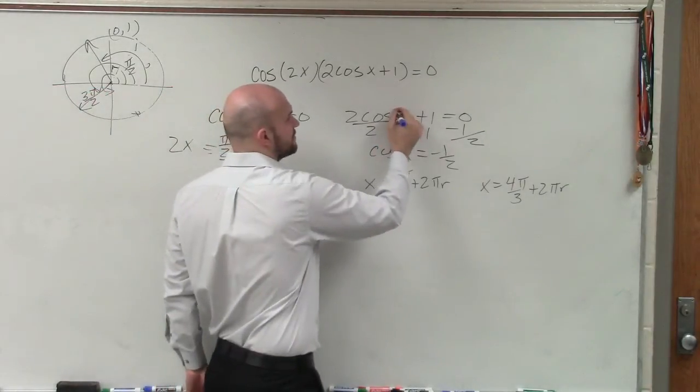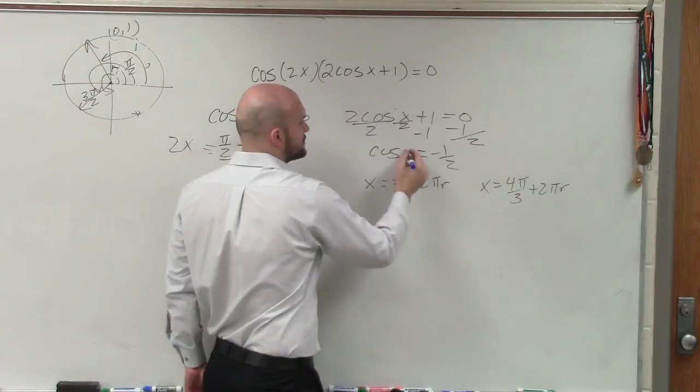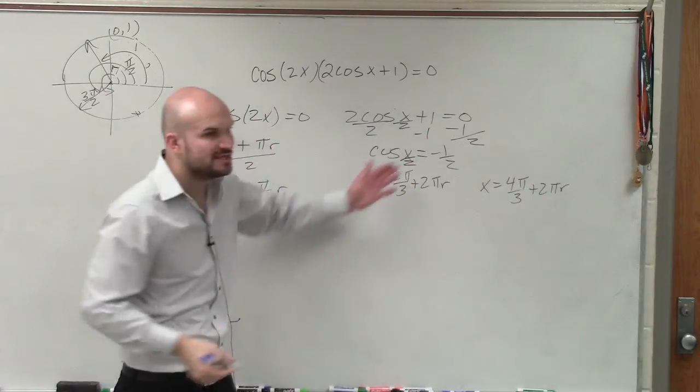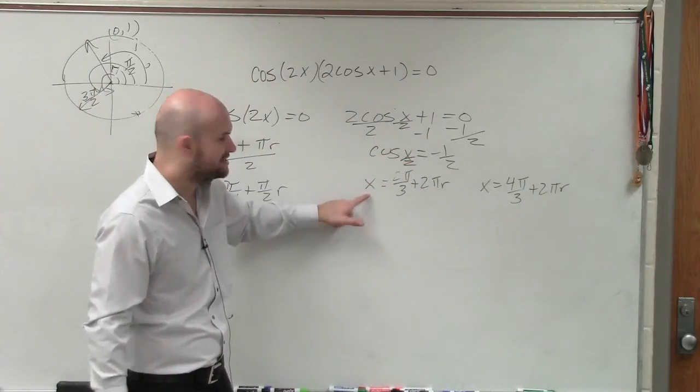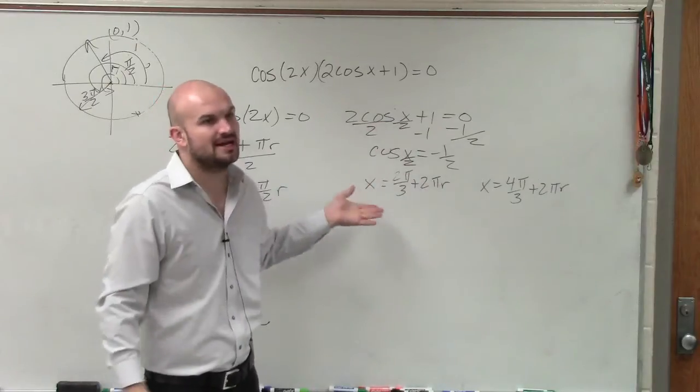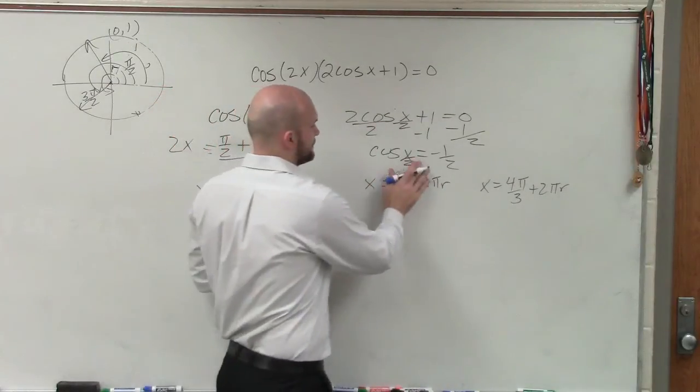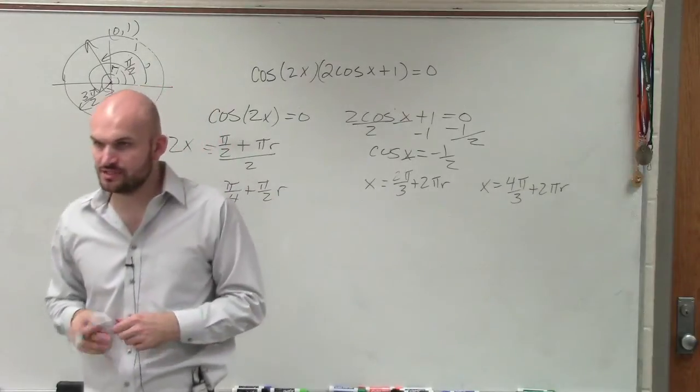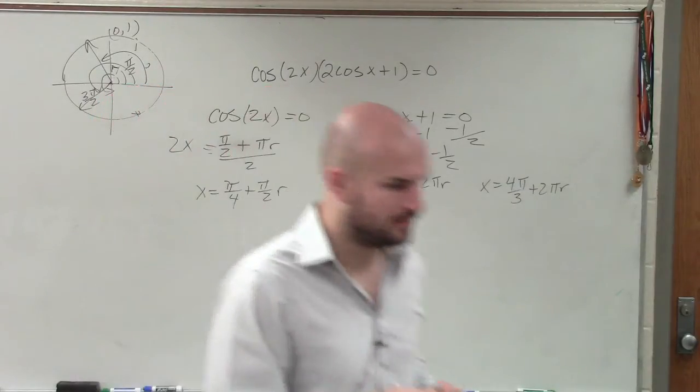The same thing. This could be like, this could be x over 2. You still do the exact same answer until you get to this last point, and then you'd multiply by 2 to get x by itself. OK? Anybody have any last questions? Good? OK.